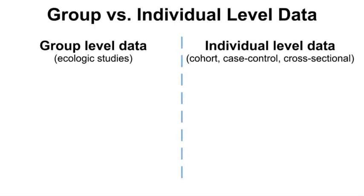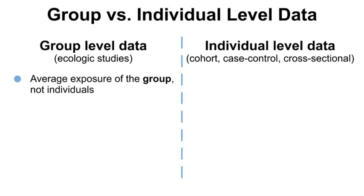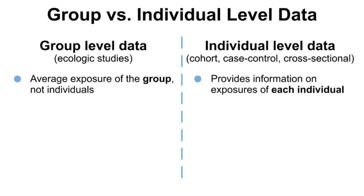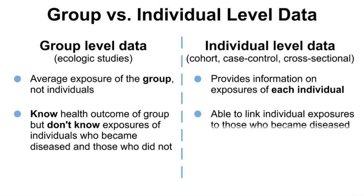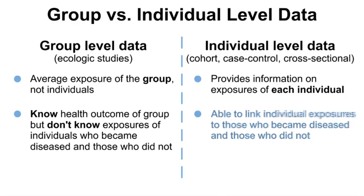Let's compare group and individual level data. Group level data averages the exposure of the group, not individuals, whereas individual level data provides information on the exposure of each individual. With group level data, we only know the health outcome of the group — we don't know the exposure of individuals who became diseased and those who did not. With individual level data, we are able to link individual exposures to those who became diseased and those who did not. Linking individual exposures is a critical difference to note between individual and group level data.